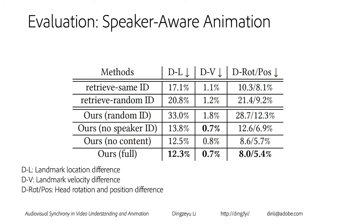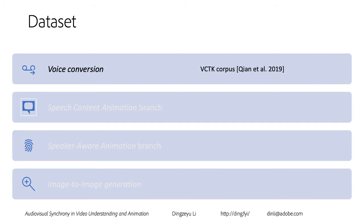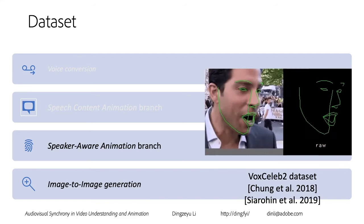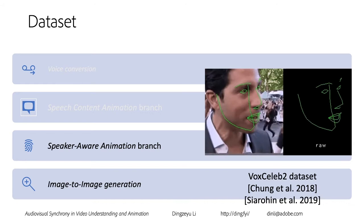I want to share about the datasets we use. For the voice conversion, we adopt Chen et al.'s VCTK dataset. For the content animation, we use the Obama Weekly Address to learn the content branch. For the speaker-aware animation and image-to-image translation, we use the VoxCeleb dataset where we have the speaker identity and the corresponding audio and facial signals.